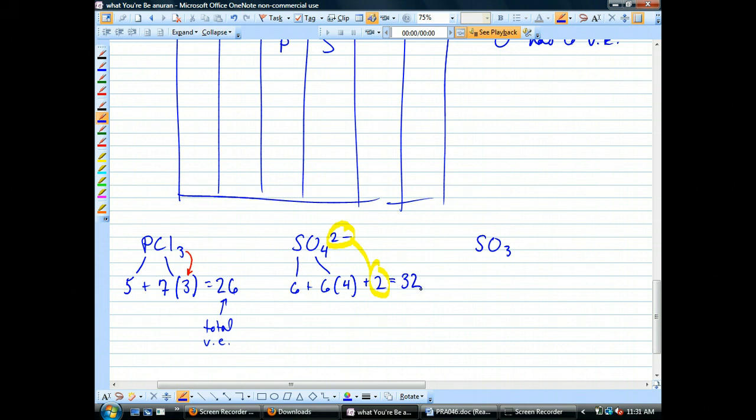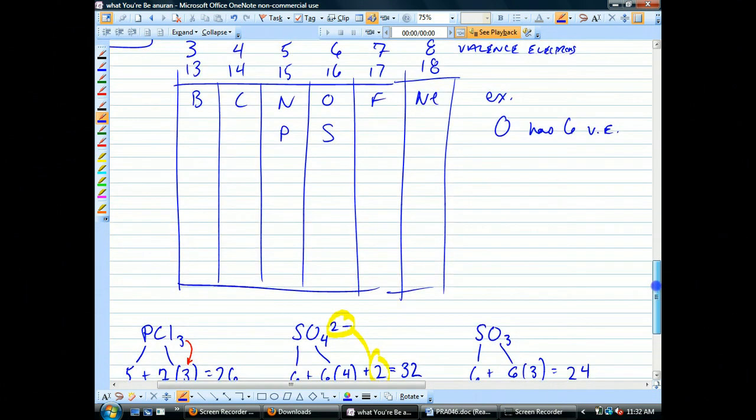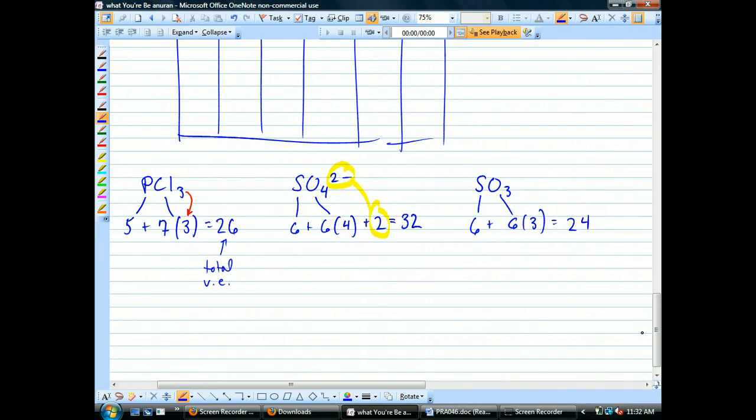For sulfate, I'm just going to do the same thing. Sulfur has six, because it's underneath oxygen right here. Oxygen has six, and there are four oxygens, but I actually have to add two. Does anyone know why I'm adding two, Blake? Exactly. Two minus charge. We talked about this when we first introduced the concept of polyatomic ions. A polyatomic ion is a molecule with extra electrons. So those extras are in the valence shell.